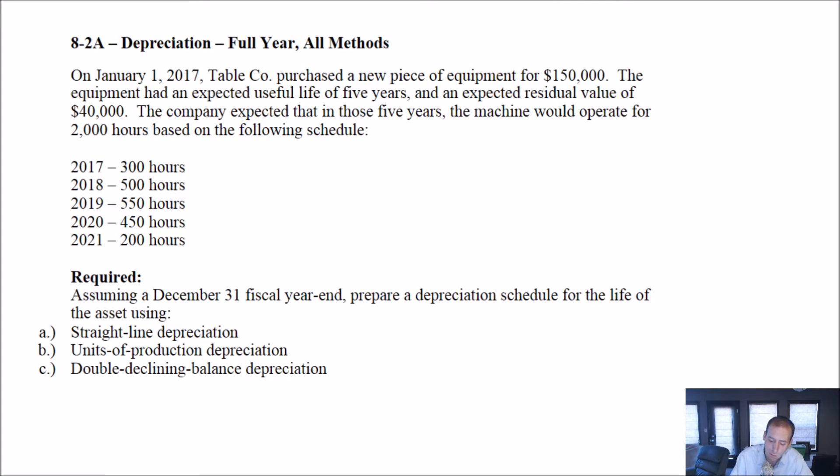The equipment had an expected useful life of five years and an expected residual value of $40,000. I don't think we've mentioned this term yet, residual value. What the term means is what we expect the value of our asset to be after we're done with it. So it's a $150,000 asset. We're going to use it for five years, then we're going to get rid of it. But it's not worth zero after the five years. We think it's going to be worth $40,000.